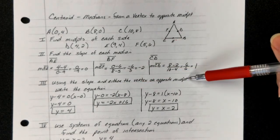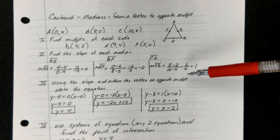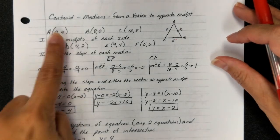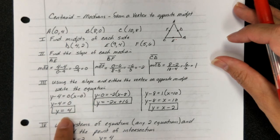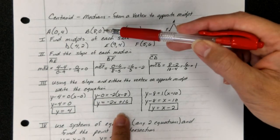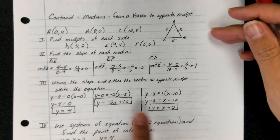And we're going to use the slope and either the vertex or the midpoint. So here I'm using the vertex and its slope and plugging it in to get y equals 4. Here I'm using the vertex and its slope to get y equals negative 2x plus 16. Here I'm using the vertex and his slope to get y equals x minus 2.